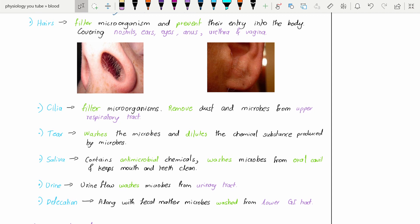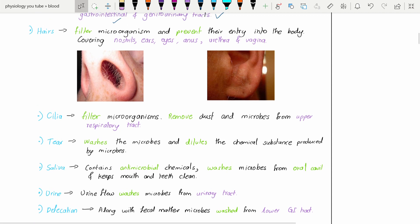Here we usually don't give that much importance in our daily life but they are so important. Hairs - these filter the microorganisms and prevent their entry into the body. We know that hairs cover our nostrils, ears, eyes, anus, urethra, and vagina.